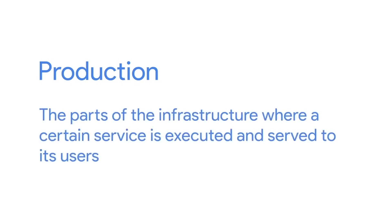Let's start by defining what we mean by production. In an infrastructure context, we call the parts of the infrastructure where a certain service is executed and served to its users production. If you host a website, the servers that deliver the website content to the users are the production servers. Inside your company, the servers that validate users' passwords are the production authentication servers.